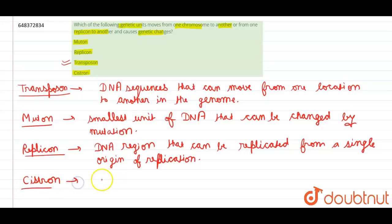Cistrons are the segment of DNA that codes for single polypeptide.